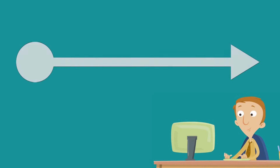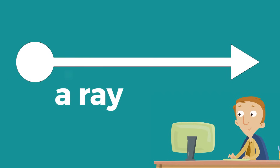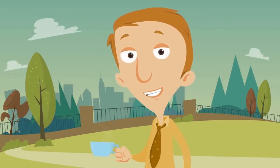What do you see here? What is this? A ray. Awesome. How do we know it's a ray? It has an endpoint and an arrow. Very cool.